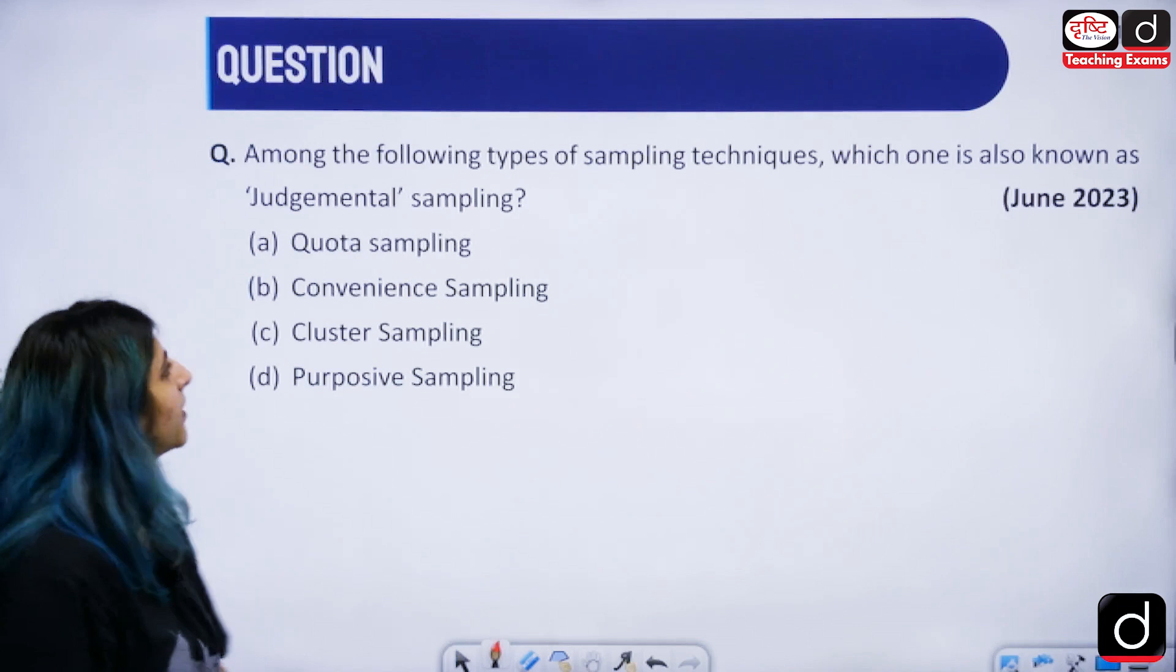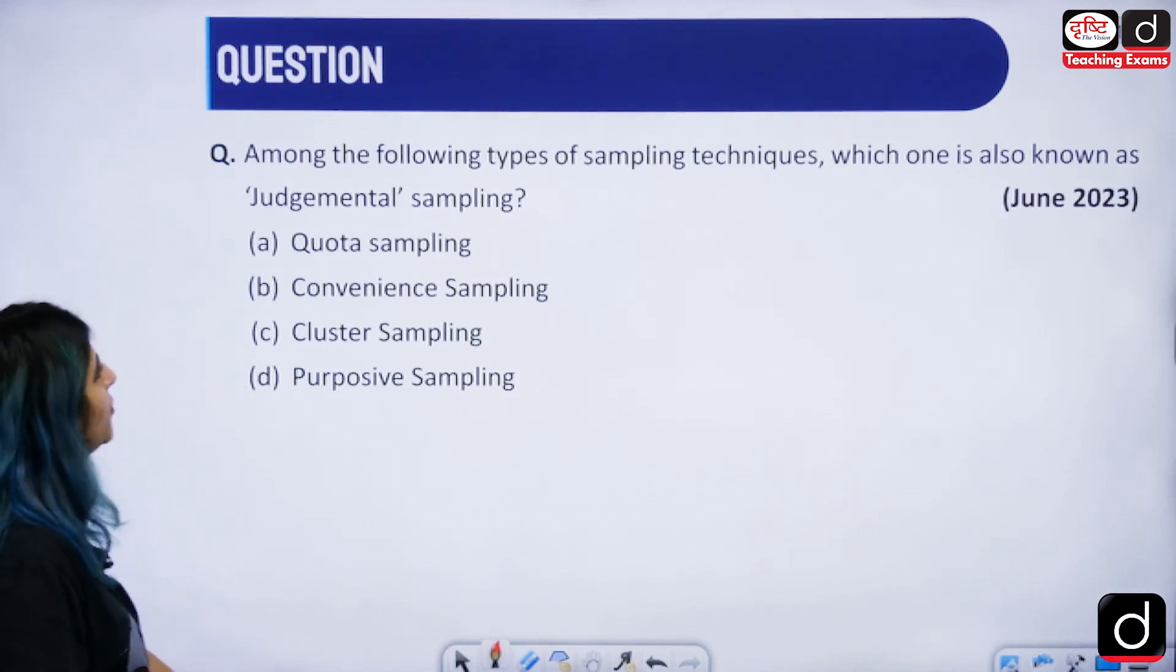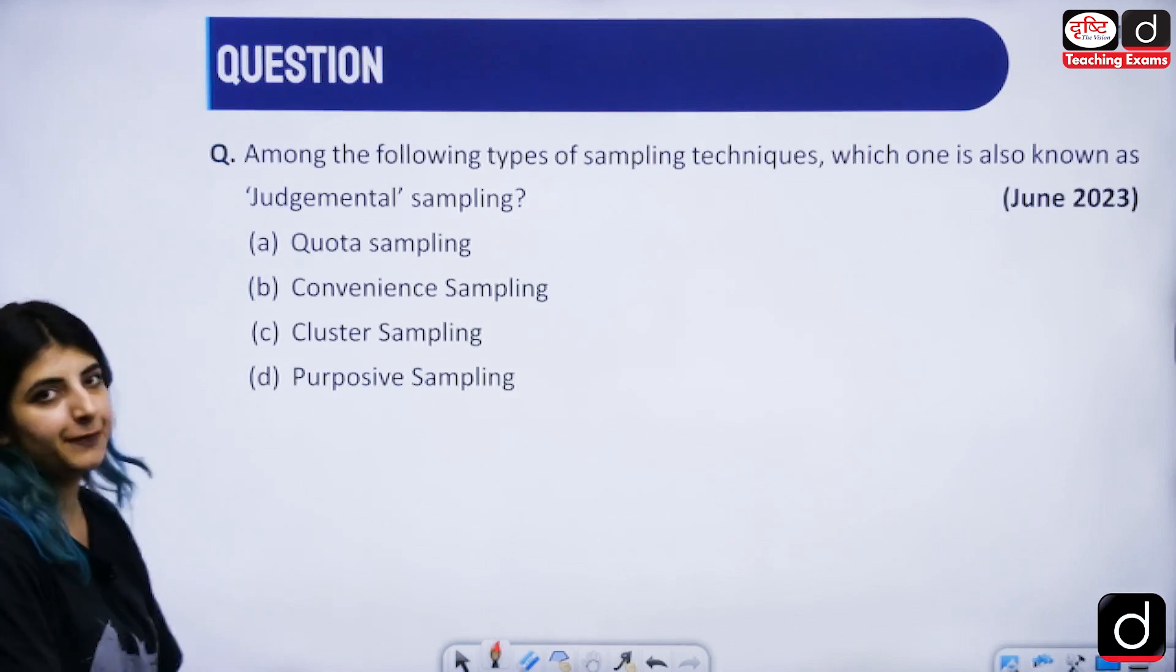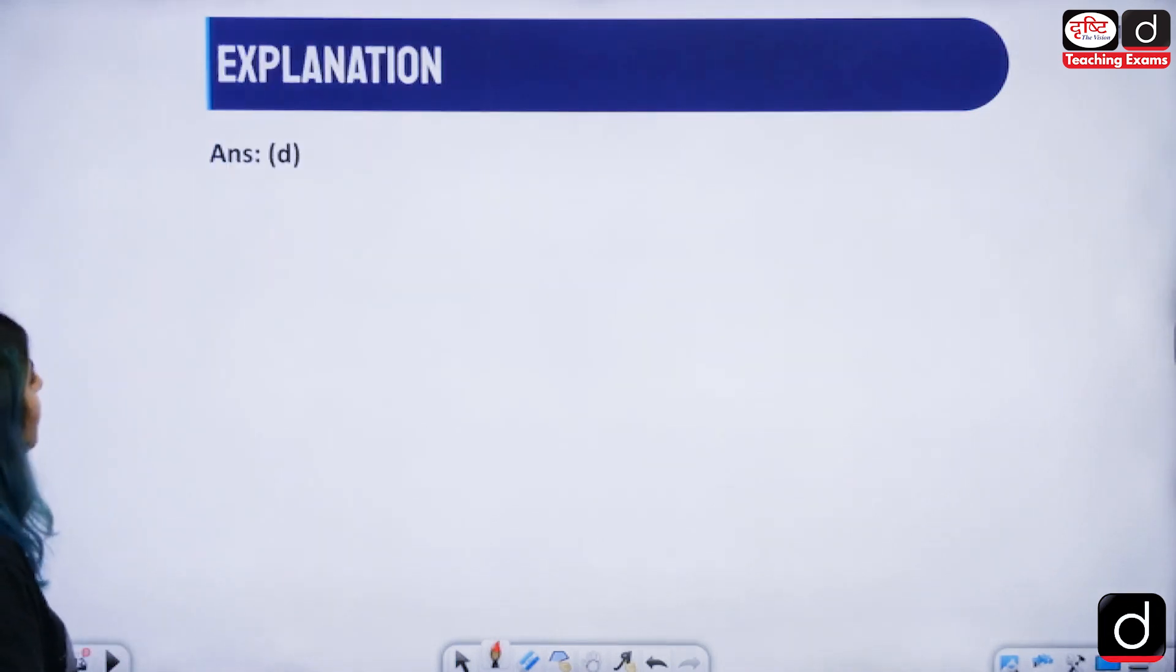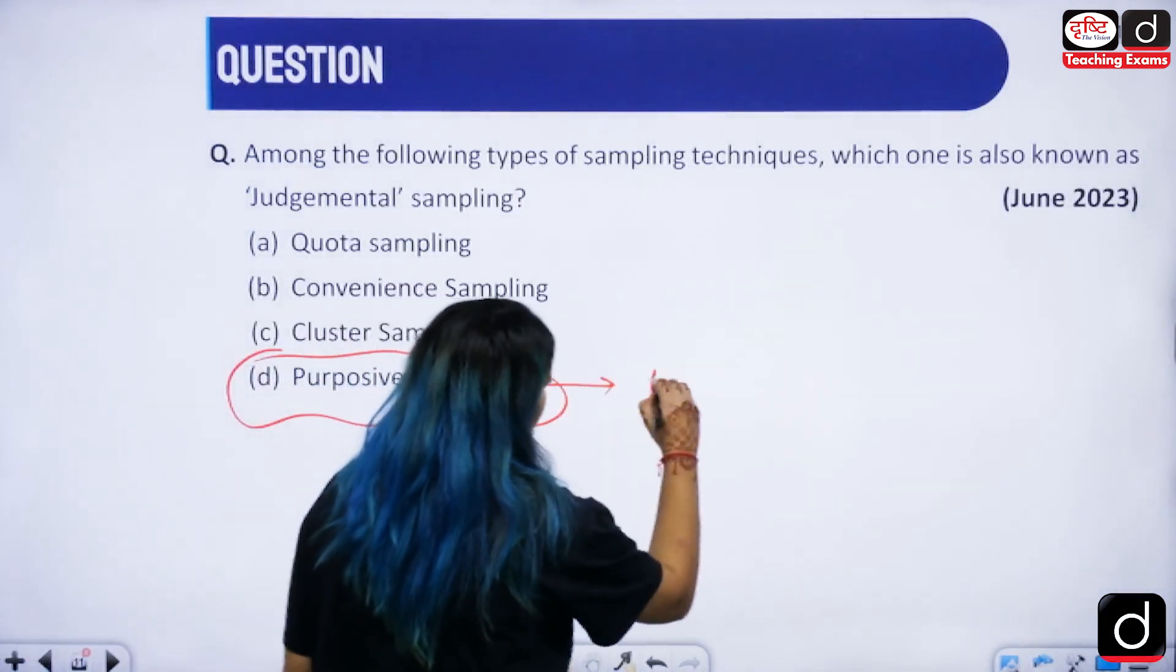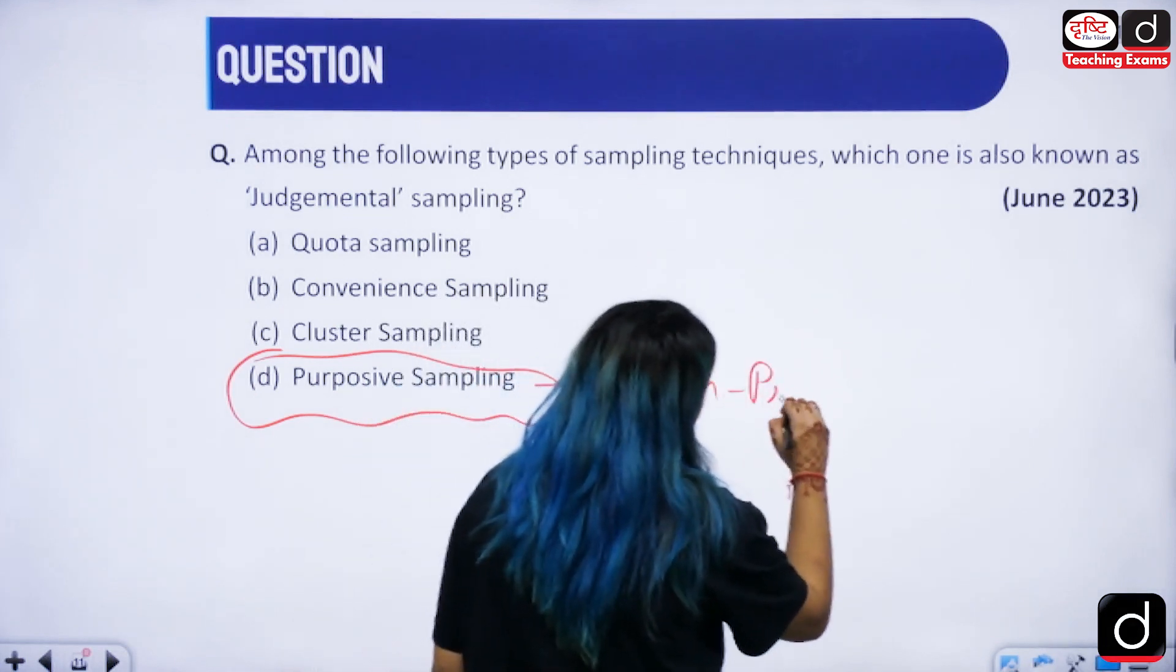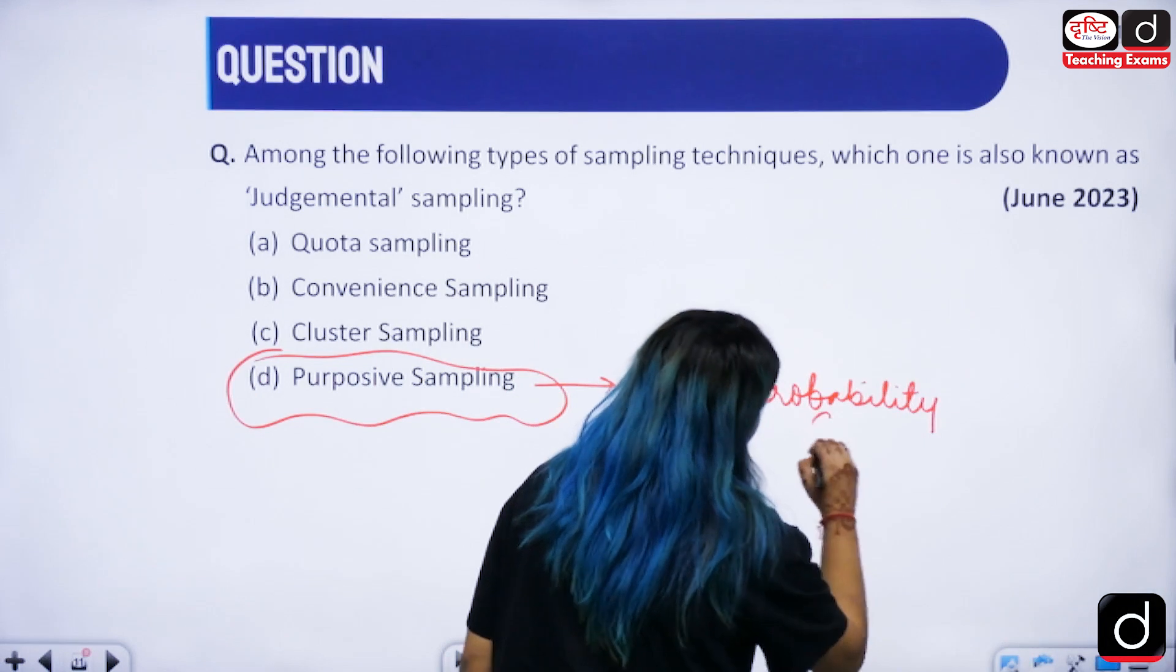Moving to the next question. Among the following types of sampling techniques which one is also known as judgmental sampling. The answer to this particular question is option D: non-probability purposive sampling which is a subtype of non-probability sampling.